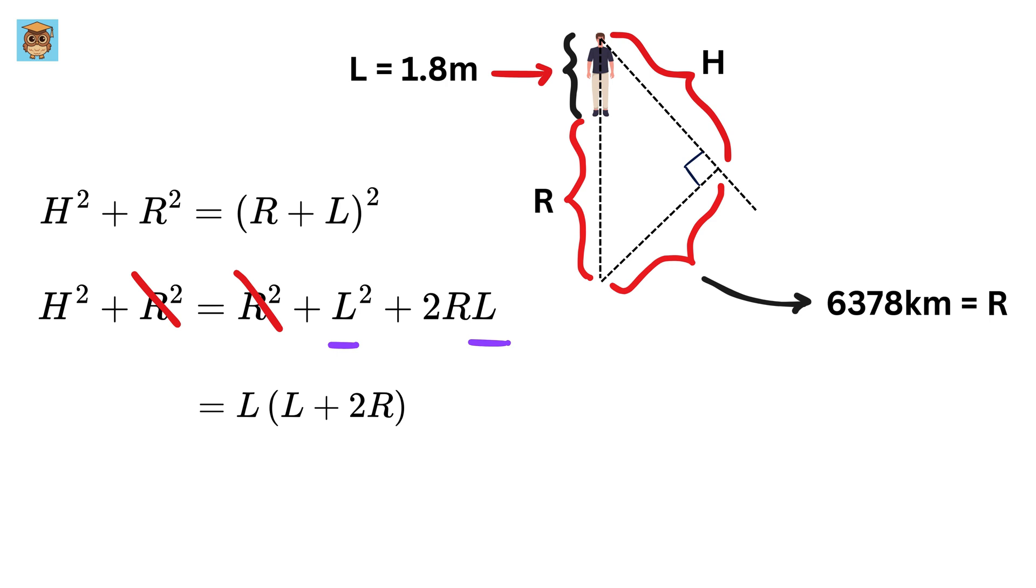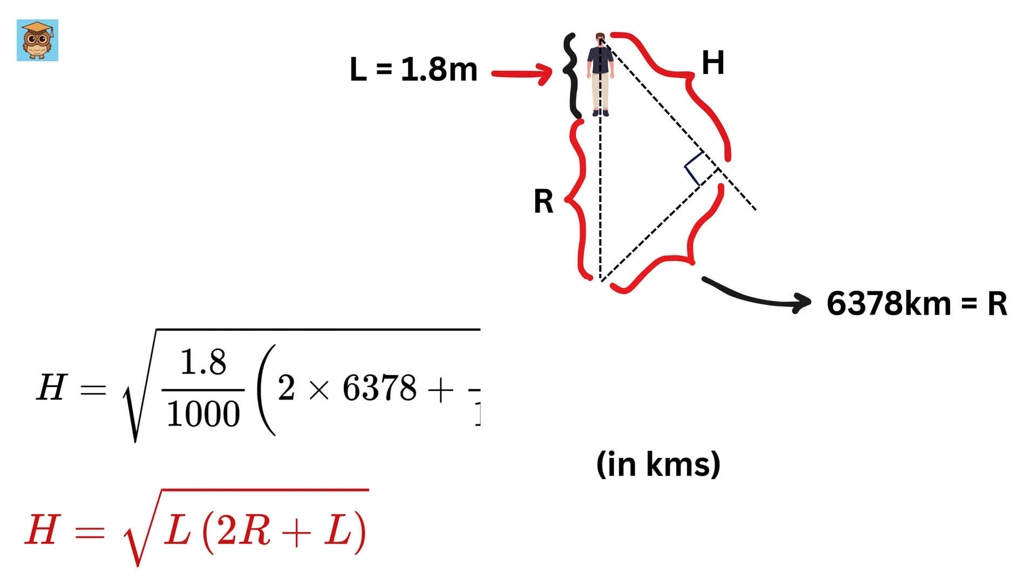That is simply amazing. So, we have H equals the square root of L times (2R + L). Let us substitute the values of R and L to get H as nearly 4.8 kilometers.